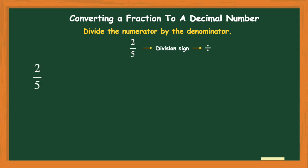When we take two-fifths and turn it into a decimal number, we divide the numerator by the denominator. The numerator of two goes inside the long division box, and the denominator of five goes on the outside. I like to tell my students: when you're the numerator, you're up on top and inside the box; when you're the denominator, you are down and out. So remember: top in, down out.